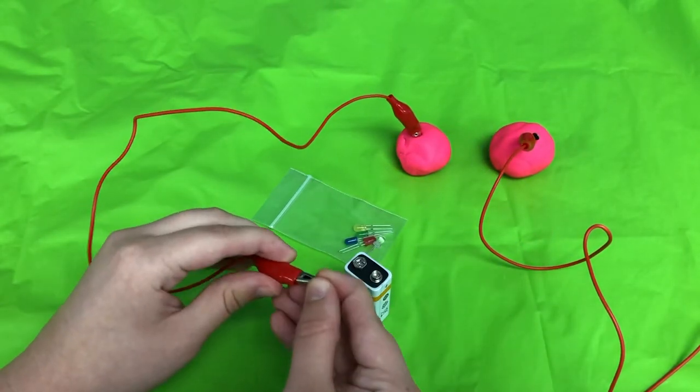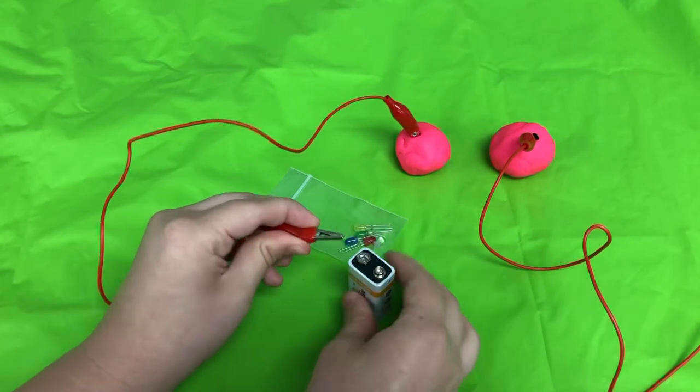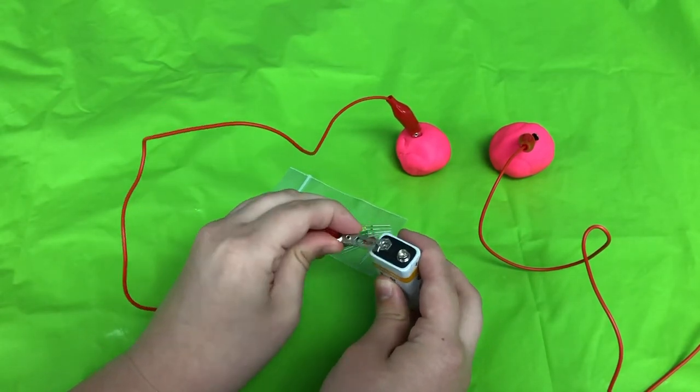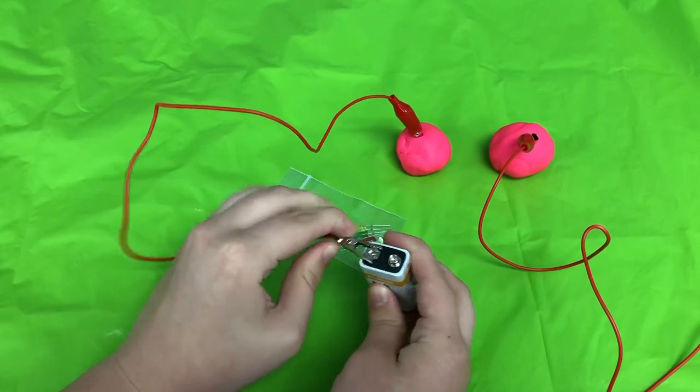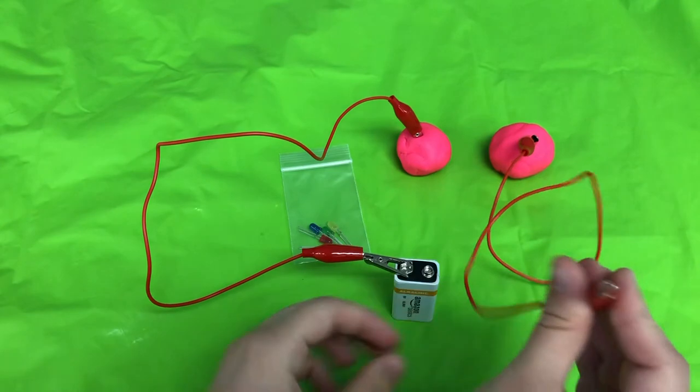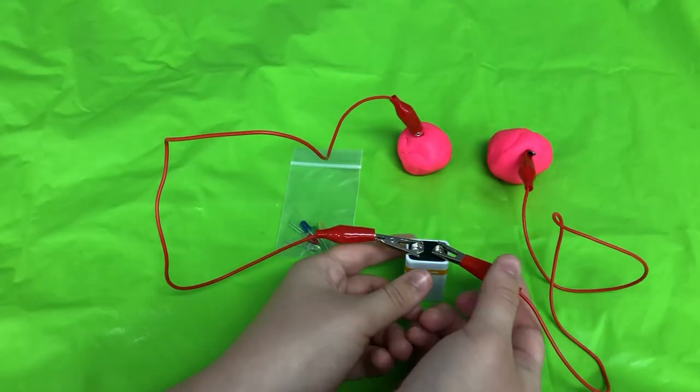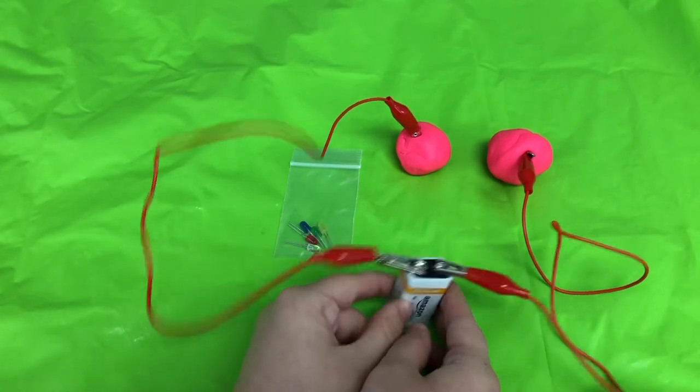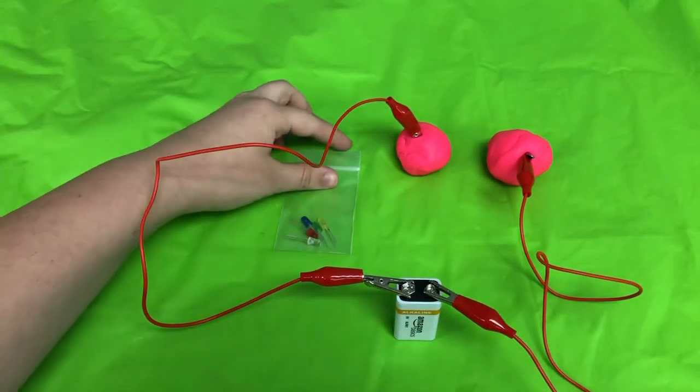So for one of our alligator clips we're going to clip it on to the negative side and then for the other you're going to clip it on to the positive side. It doesn't matter which alligator clip or which Play-Doh ball you put on to the positive or negative side, you just want to remember that for when we have our LED lights.